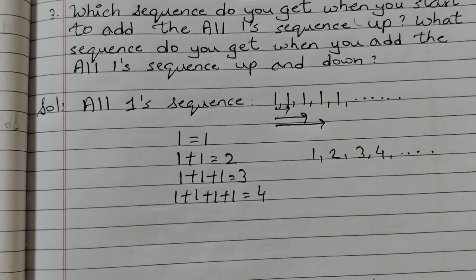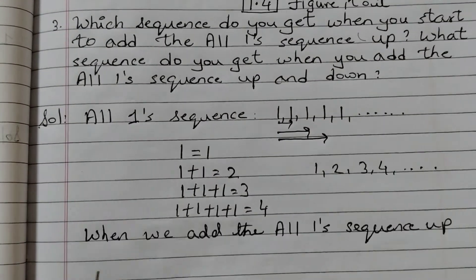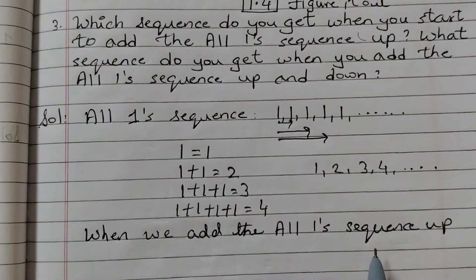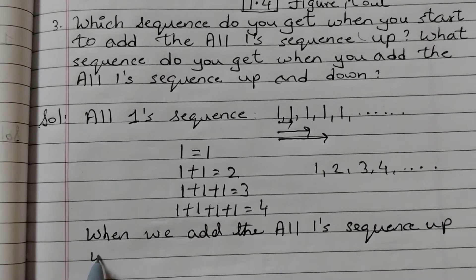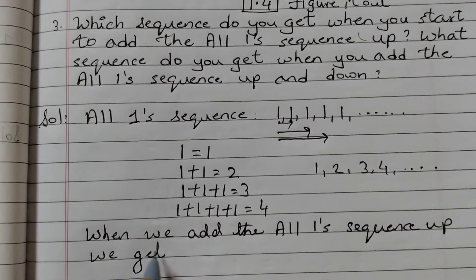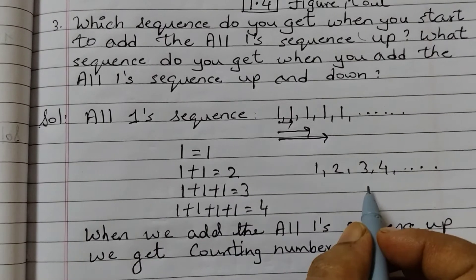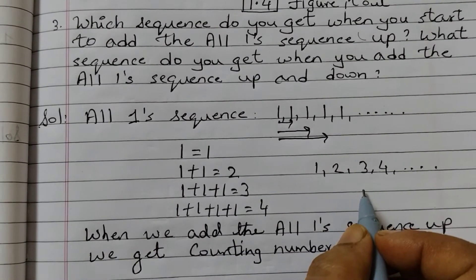That means when we add the all ones sequence going up, we get counting numbers. This is the counting number sequence.